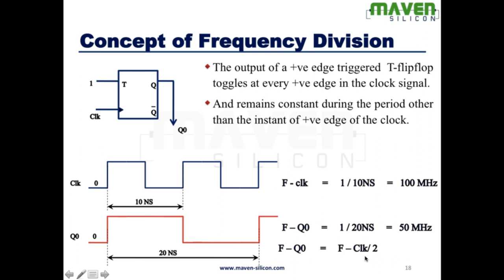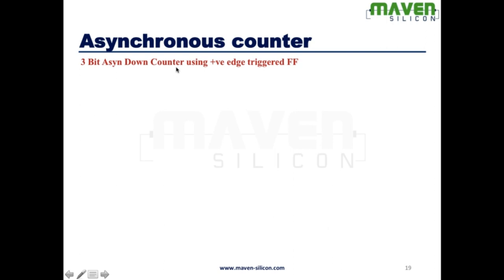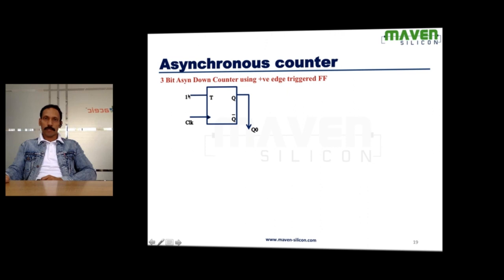This is how T flip-flop divides the clock frequency. Now, let's look at asynchronous counter. How to design a 3-bit down counter using positive edge-triggered T flip-flop. The input is tied with 1.